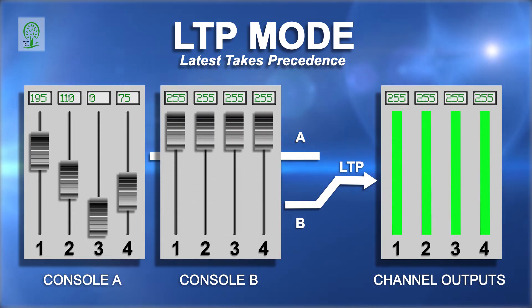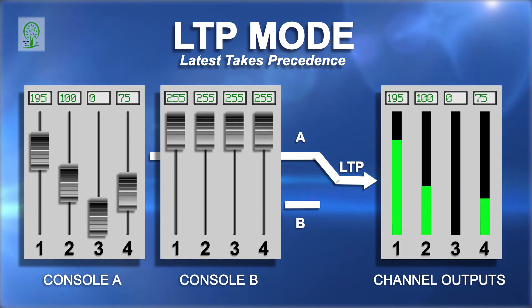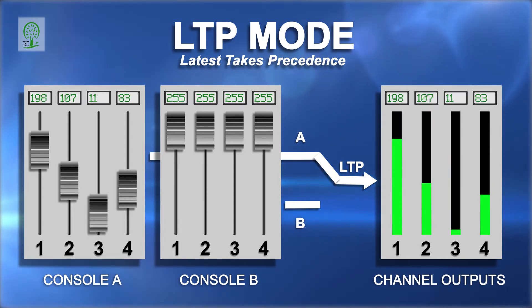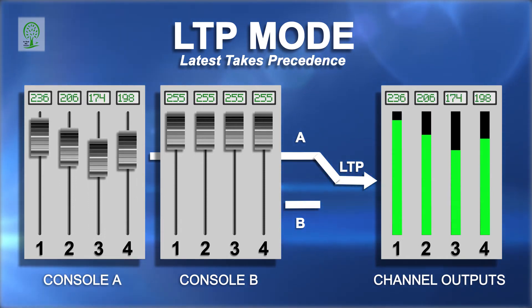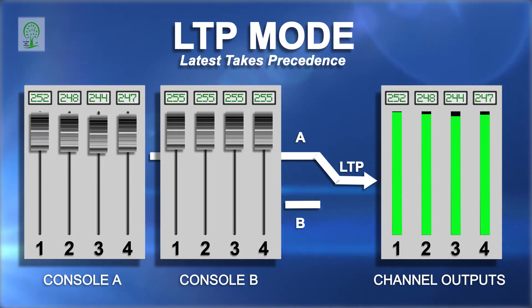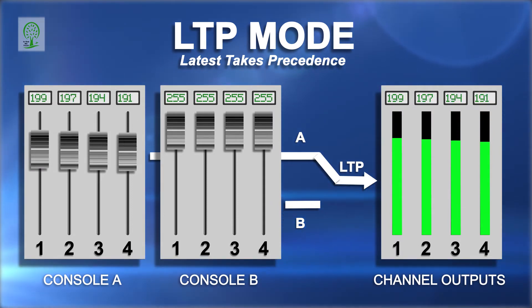Then if console A were to change as shown, then the merger will switch to input A. All 512 channels of A's DMX universe will now be sent to the output, ignoring input B.